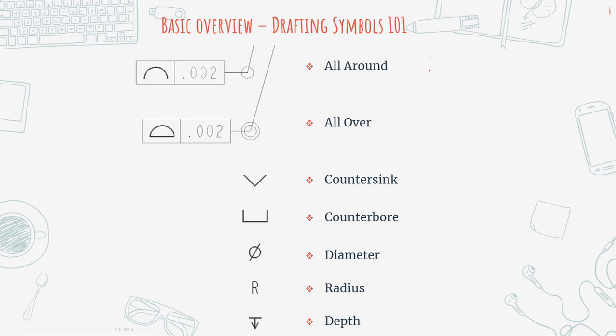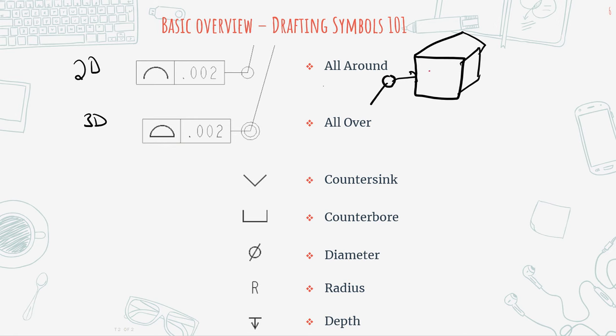Now let's look at some drafting symbols. The first symbol is 'all round,' which is complementary to 'all over.' The difference is that all round is a 2D symbol and all over is a 3D symbol. For instance, we're saying the profile of a line has to be 0.002 all round — which means if you have a box and use all round, the perimeter of that line has to be within 0.002. So it's a 2D line but it applies to the entire perimeter.